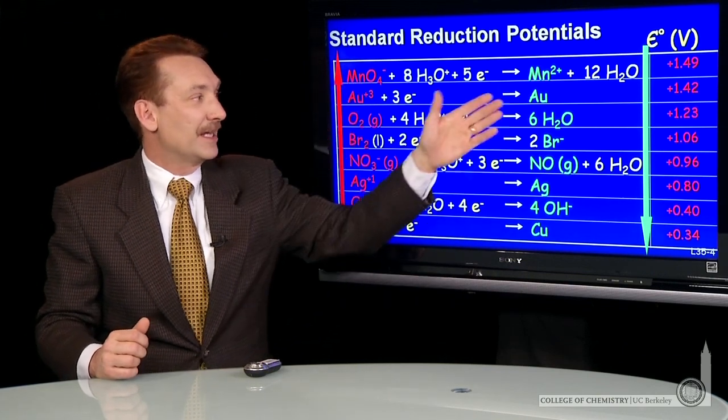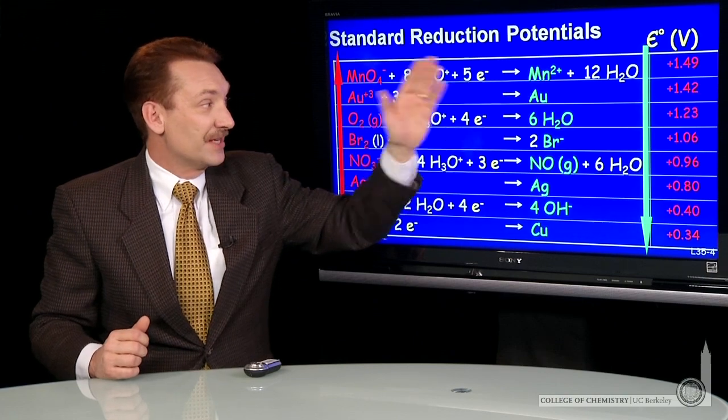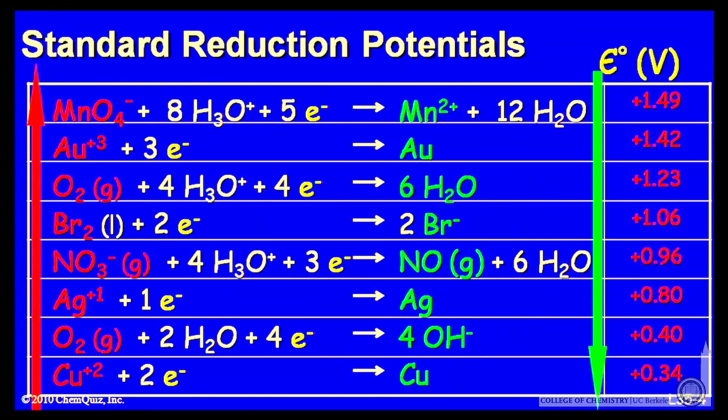So permanganate can oxidize gold and bromide ions and silver, et cetera, all the way down. And gold ions can oxidize the water and the silver and the copper.